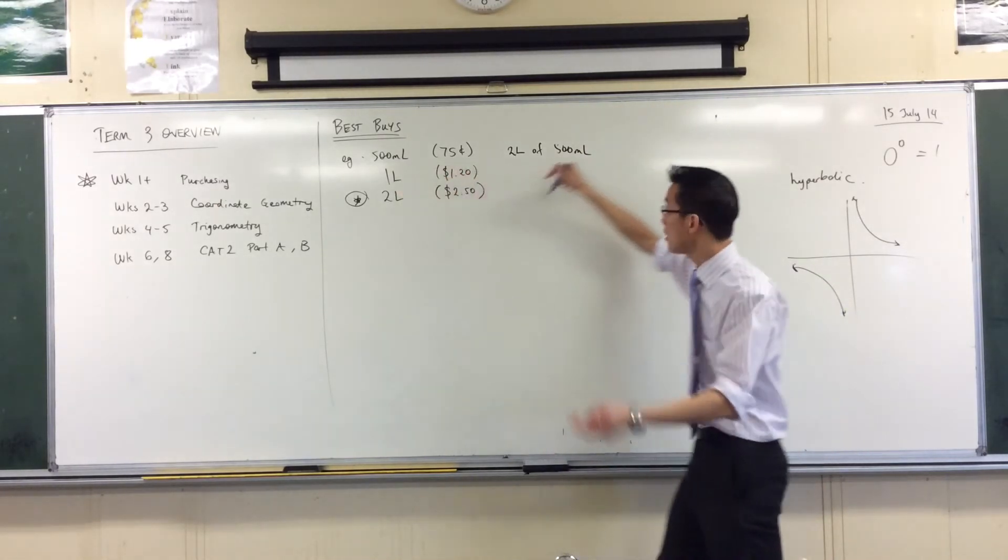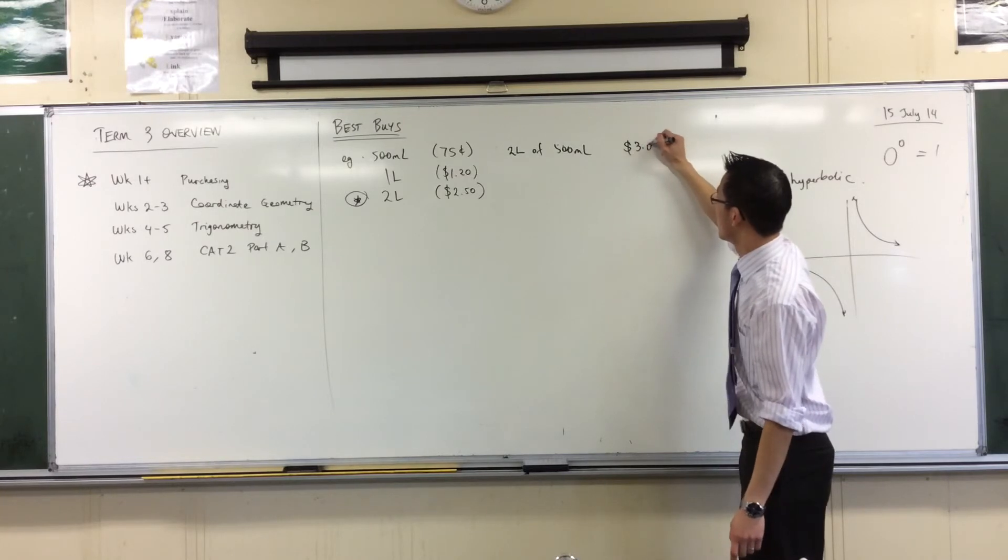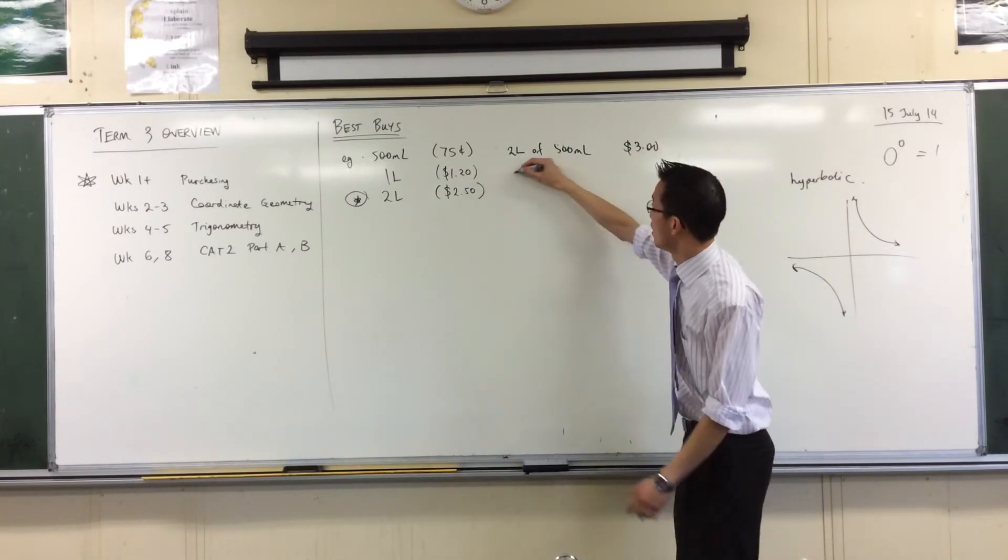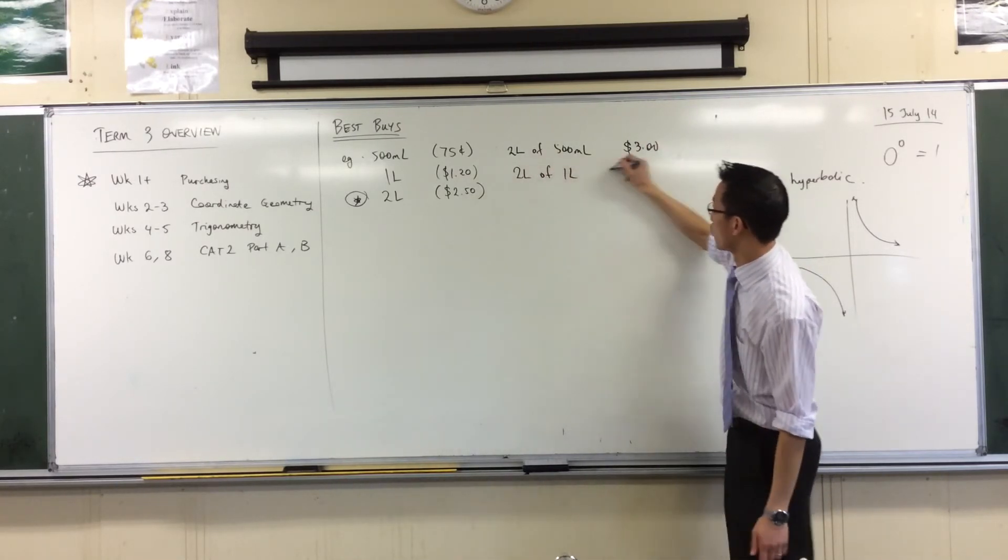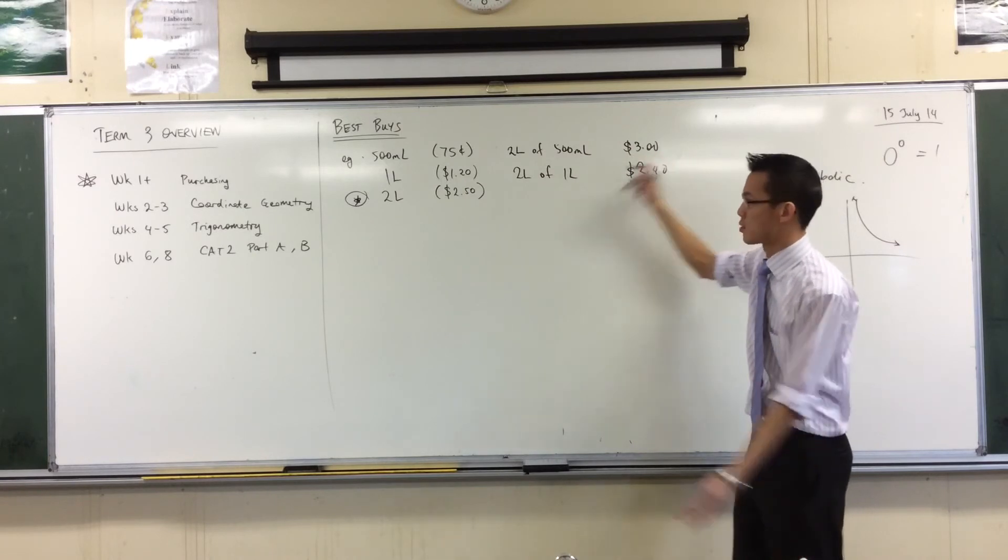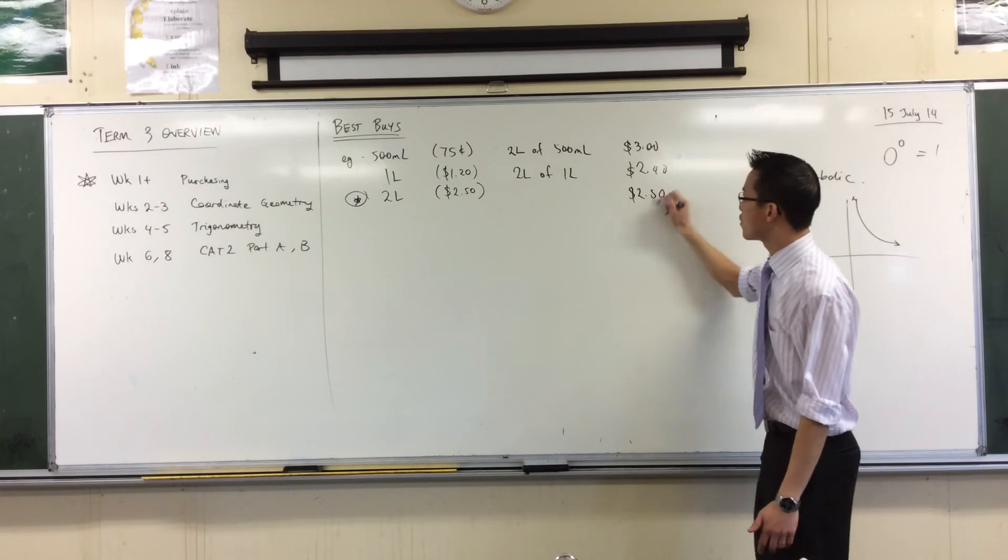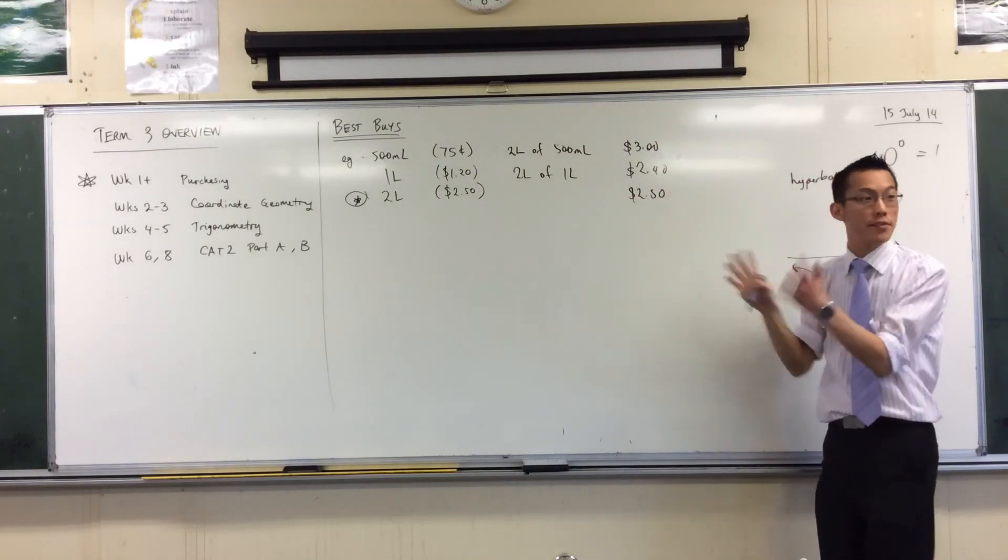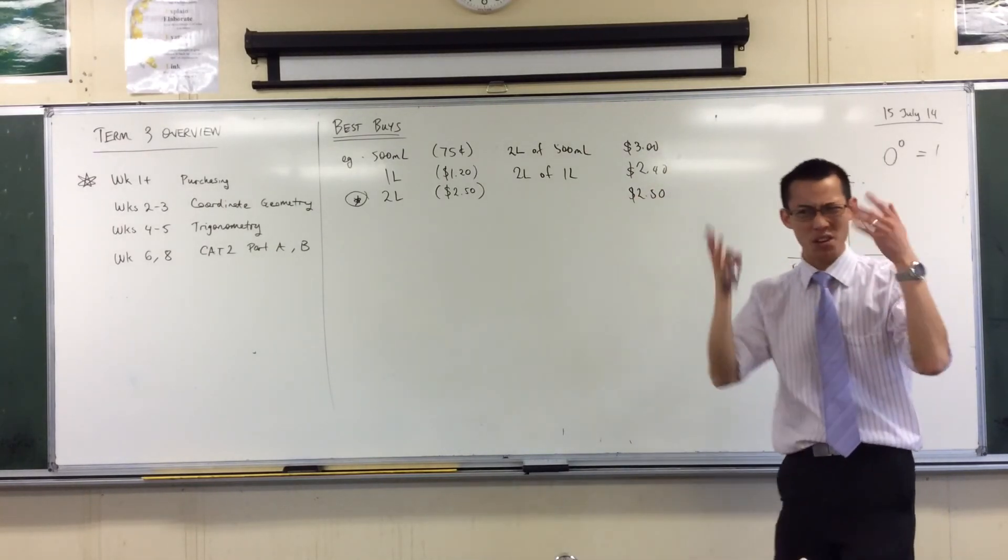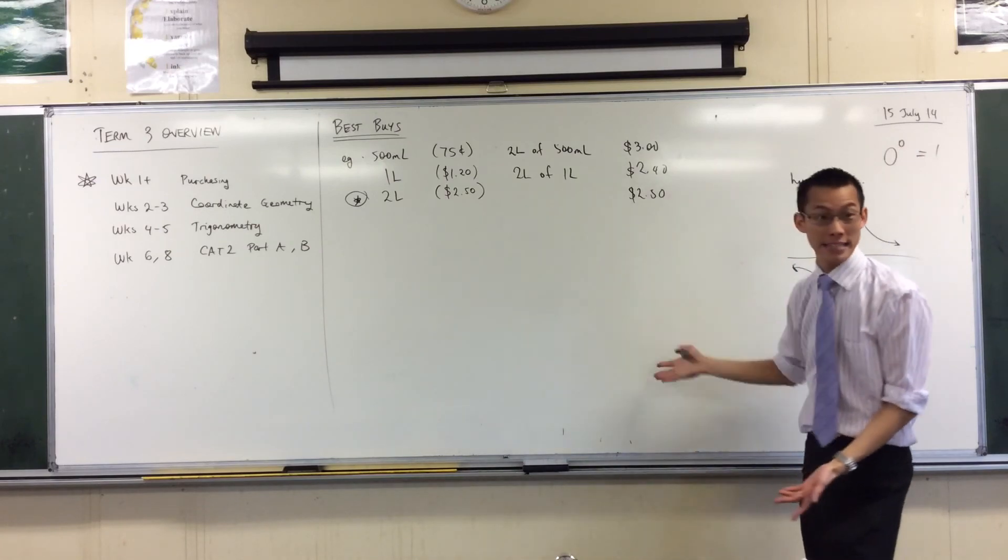We already worked out this one—two liters of one liter bottles, you already told me that was $2.40. And this one you don't have to do any work, it's $2.50. So clearly now you can see I can make an equivalent comparison, and that's kind of what you were doing mentally even if you didn't write it down.